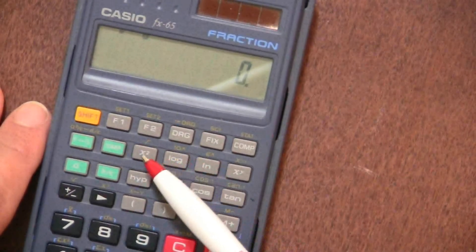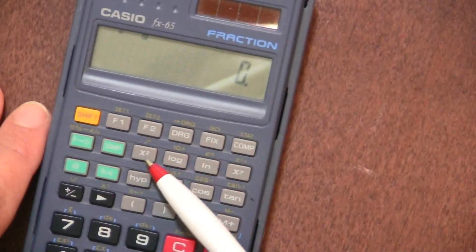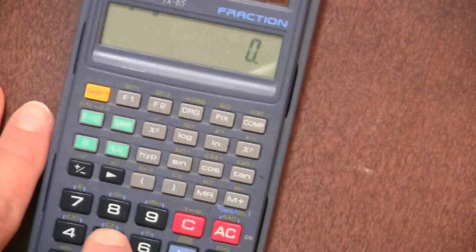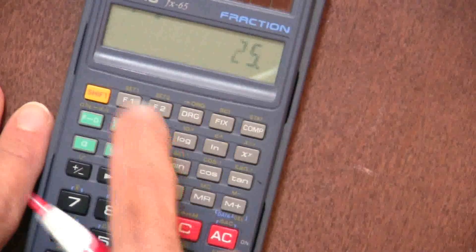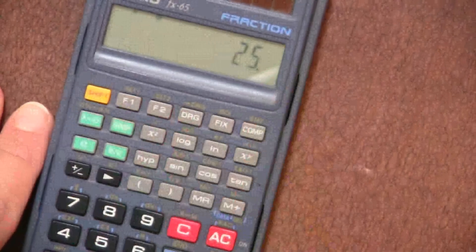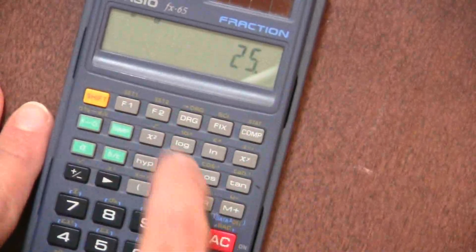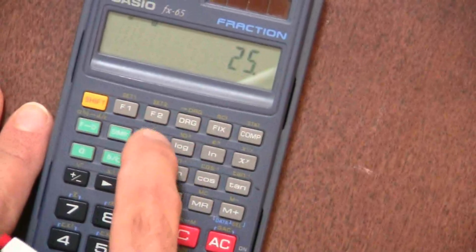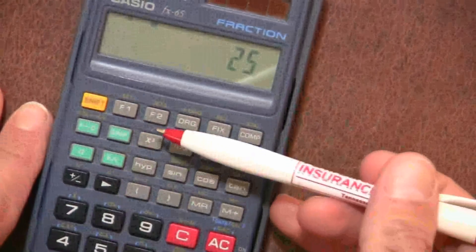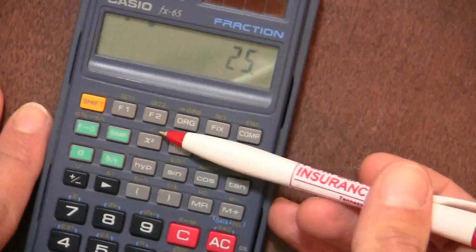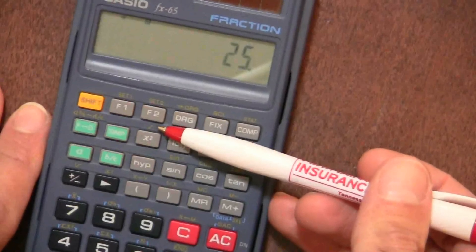And, of course, the x squared, if you want to do 5 squared, you'll get 25. So that's a handy little button. And also, in yellow above it, it has a square root sign.